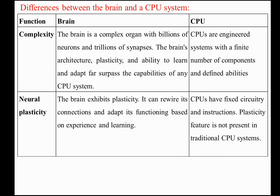Considering the differences: in terms of complexity, the brain is a far more complex organ with billions of neurons and trillions of synapses. The brain's architecture, plasticity, and ability to learn and adapt surpass the capabilities of any CPU system. CPUs are engineered systems with a finite number of components and defined abilities, and are not nearly as complex.